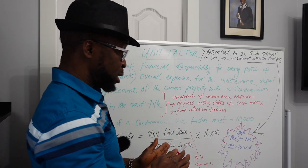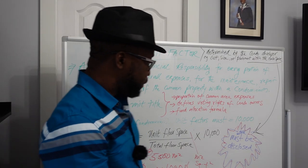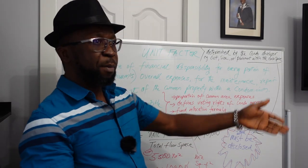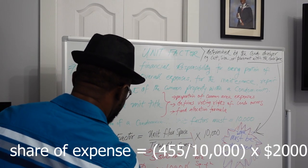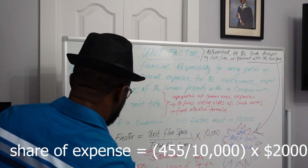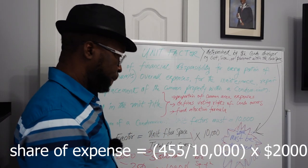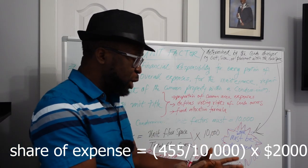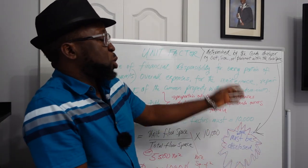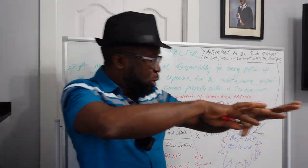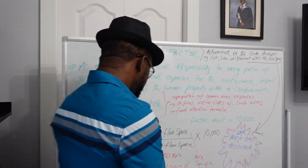If, for instance, the condominium makes an expense of $2,000, you calculate 455 over 10,000 times $2,000 to find your share. The unit factors of all units added together must equal 10,000. If the developer had instead used construction cost, the formula would be: the cost of this condominium as against the general cost of building the whole place, multiplied by 10,000 — it would still give you the unit factor, though it might not be 455.